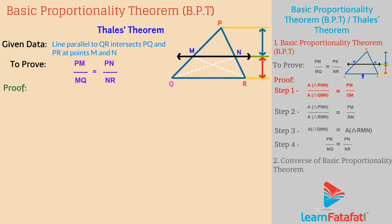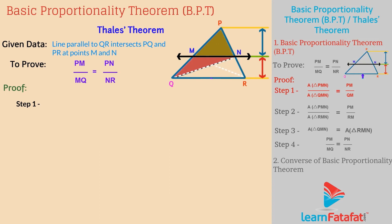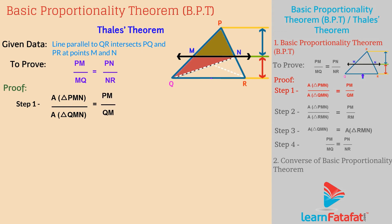Proof. Step 1: Consider triangle PMN and triangle QMN. These are triangles having equal heights. Taking the ratio of their areas gives us: Area of triangle PMN divided by Area of triangle QMN is equal to PM divided by QM. This is equation 1.